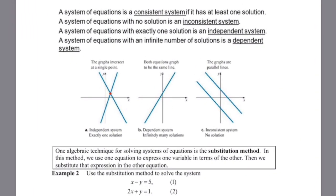A couple of things to consider: if a system of equations is consistent, it has at least one solution. If it has no solutions, we call it inconsistent. We also label systems as dependent or independent. An independent system has exactly one solution. A system with infinitely many solutions is called dependent. When we have exactly one intersection point, the system is independent and consistent. If both graphs are on the same line, we have infinitely many solutions — that is a dependent and consistent system.